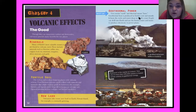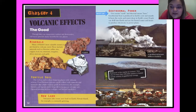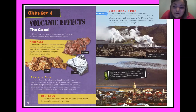New land: volcanoes also create new land on Earth — Hawaii, for example, is constantly growing. Geothermal power: 'geo' means earth, 'thermal' means heat. Geothermal heat is produced in Earth's core and mantle, heating rocks and water deep in Earth's crust. People can drill into Earth and use the heated water and steam to produce electricity at power plants. There's a geothermal power station in Iceland — the capital, Reykjavik, with over 100,000 people, is heated almost entirely by geothermal energy.